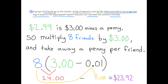Number 4. A group of 8 friends go to the movies. A bag of popcorn costs $2.99. How much will it cost to get one bag of popcorn for each friend? Explain how you can calculate this mentally. $2.99 is $3 minus a penny. So, multiply 8 friends by $3 and take away a penny per friend. 8 times $3 equals $24. Then take away 1 penny for each friend — that's 8 pennies. $24 minus 8 pennies equals $23.92. Altogether, for 8 bags of popcorn, it would cost $23.92.